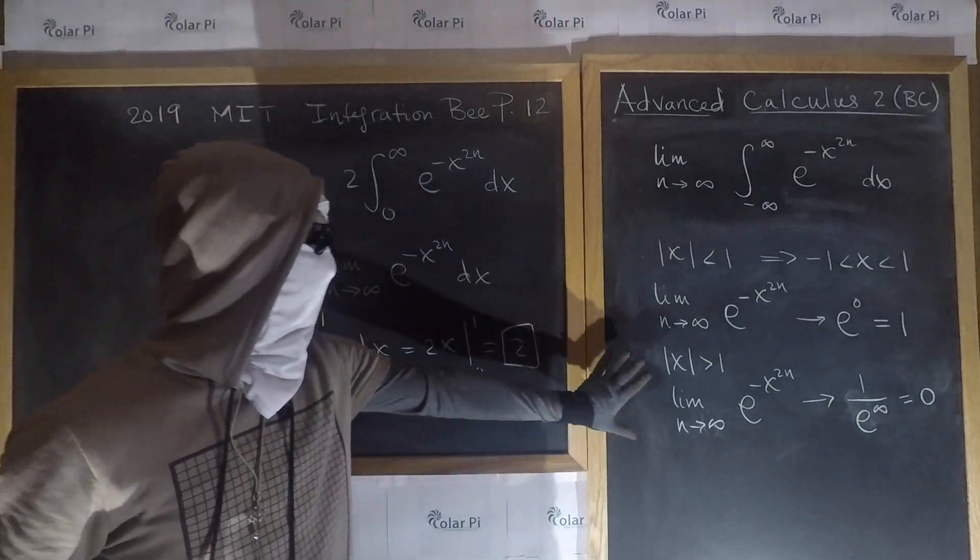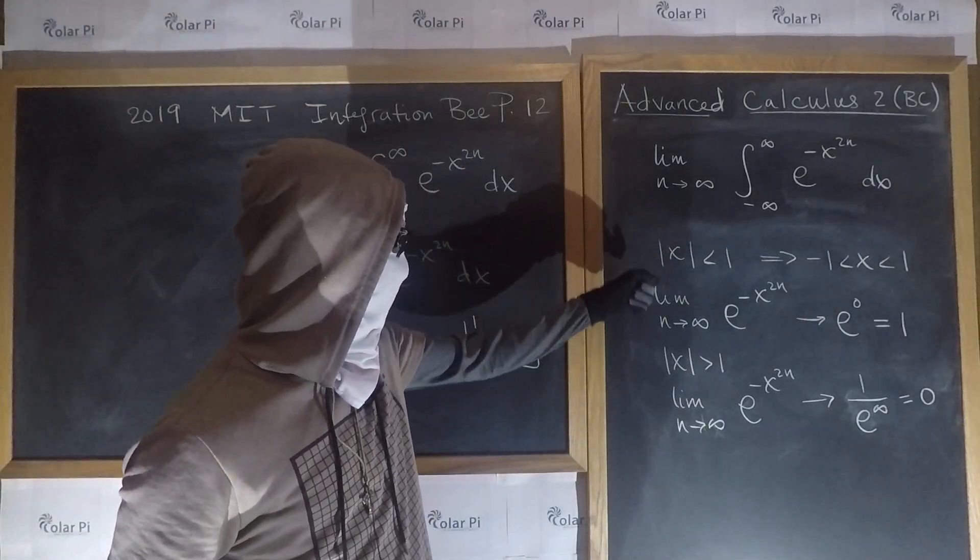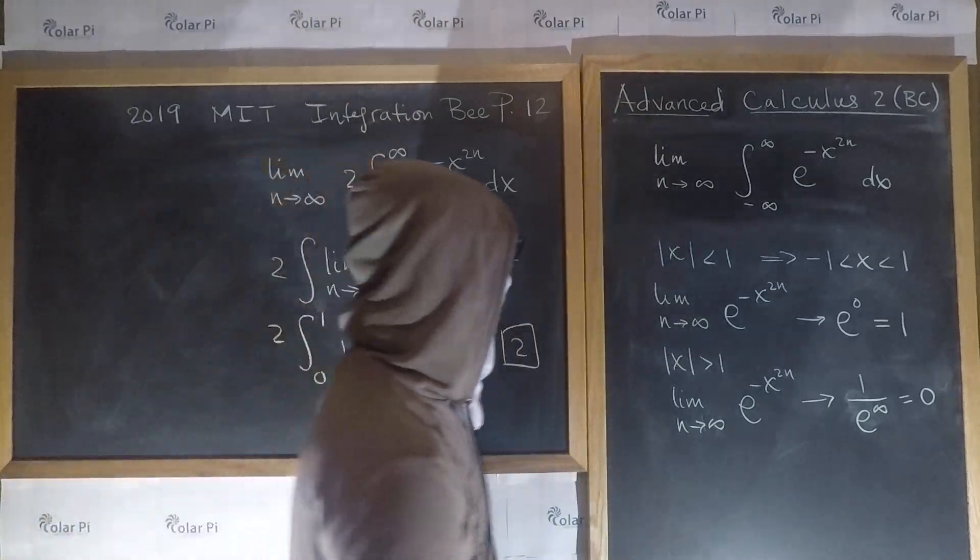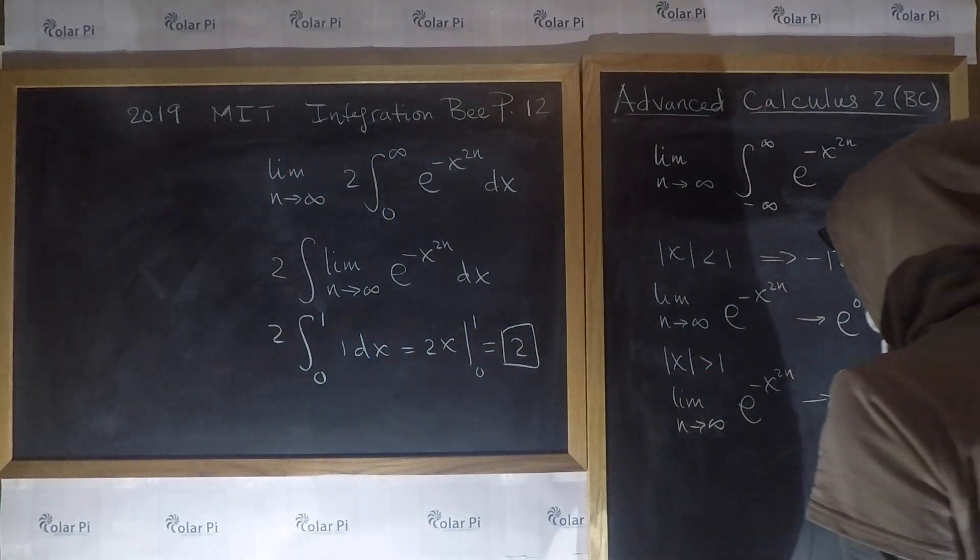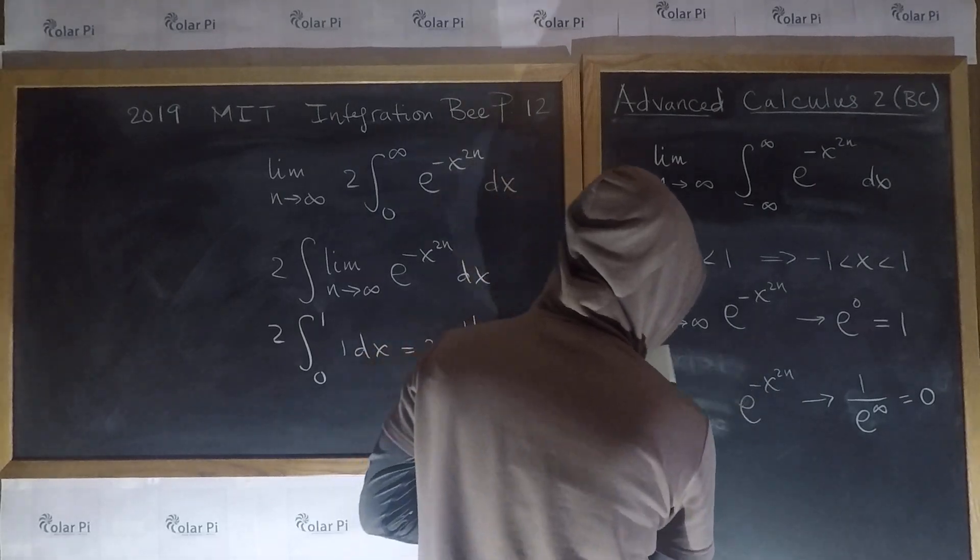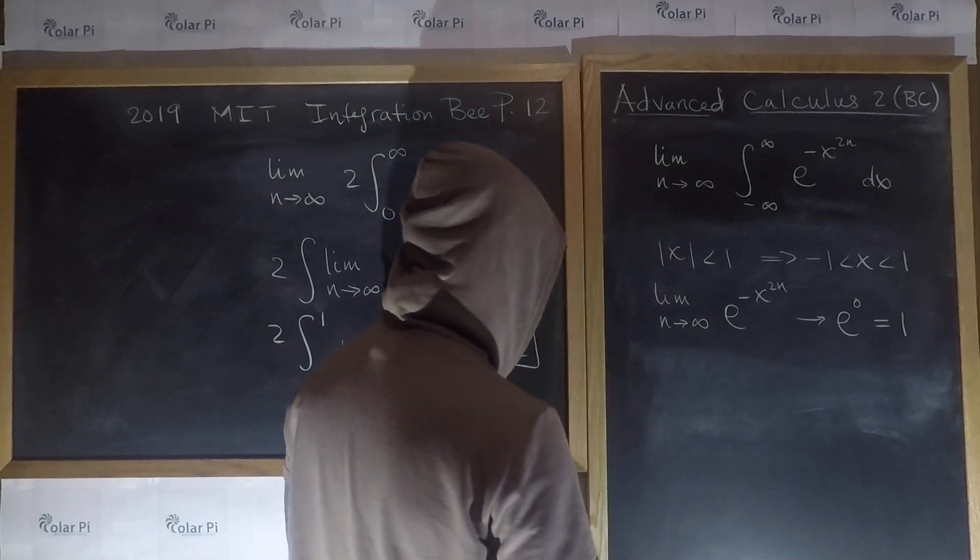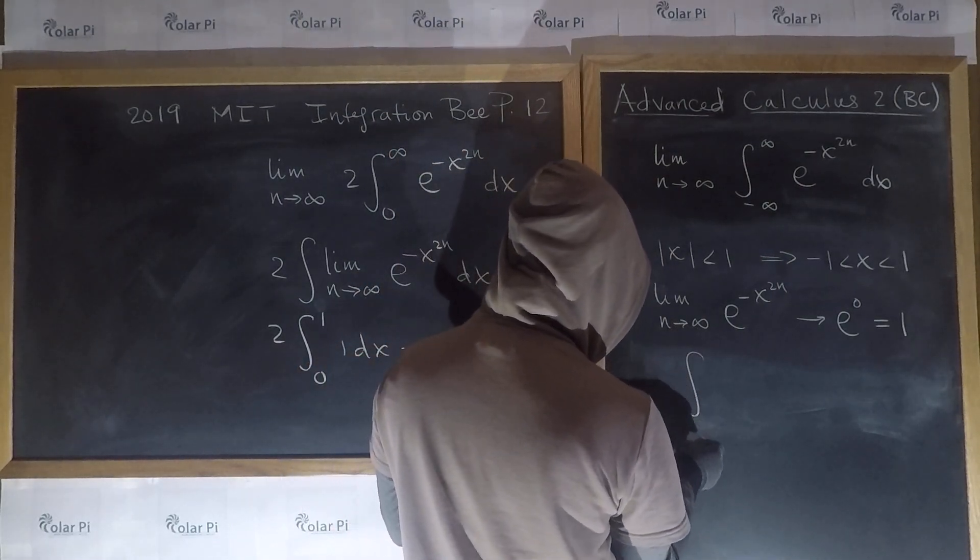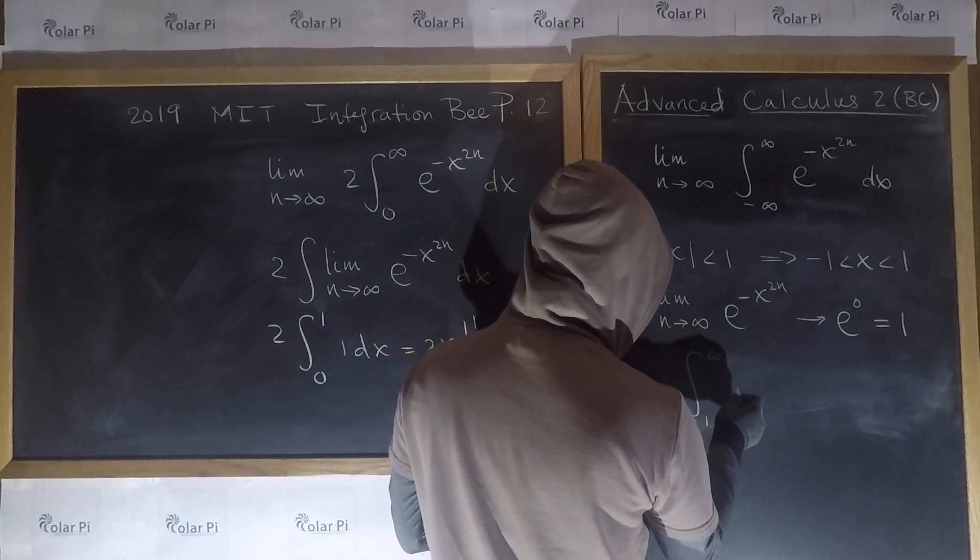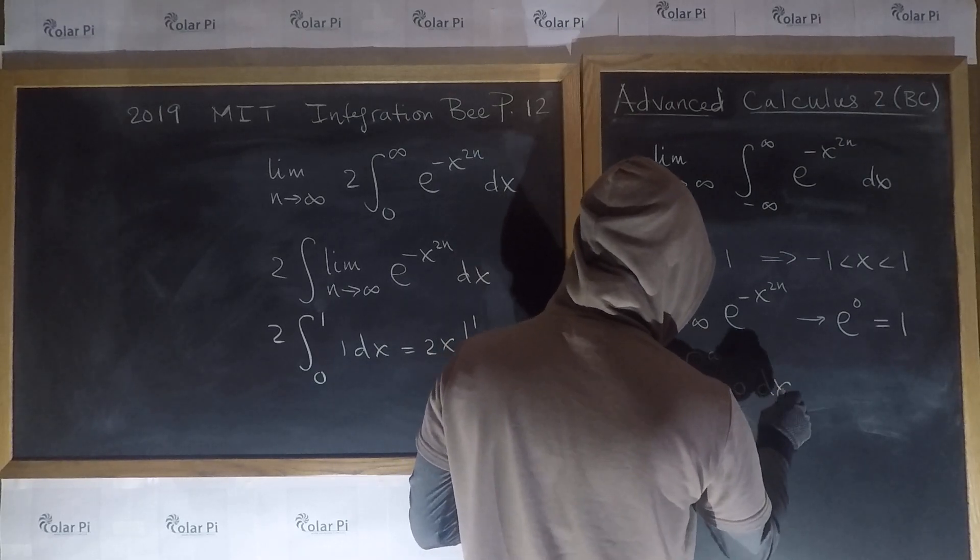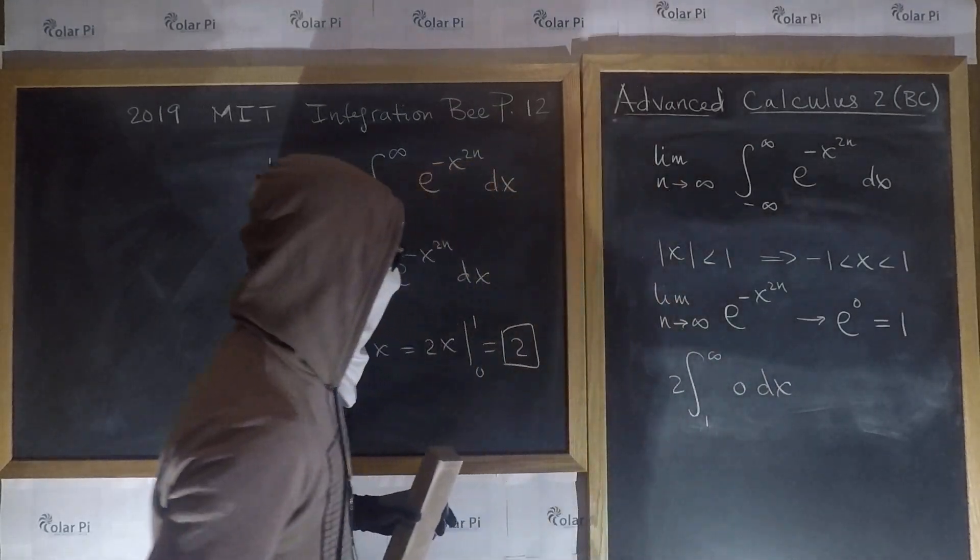And for x's outside of this interval, so for x's where the absolute value of x is more than 1, for such x's, the integral becomes integral from 1 to infinity of 0 dx, and then double that.